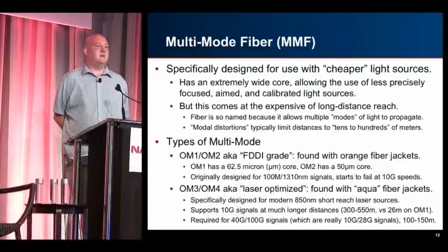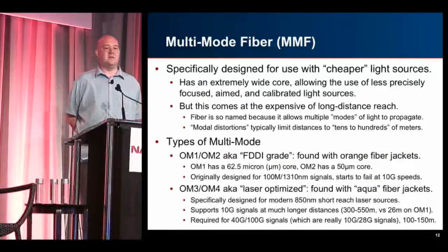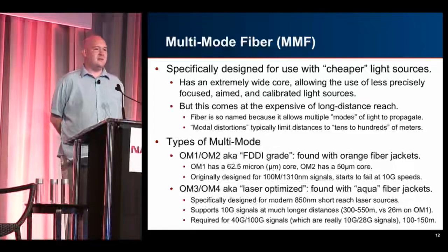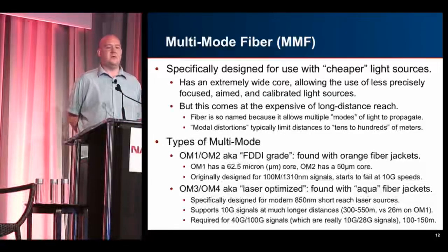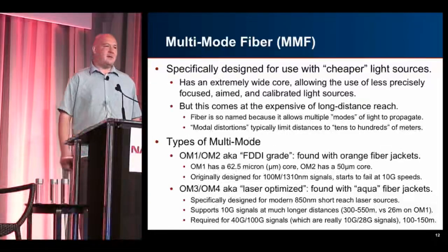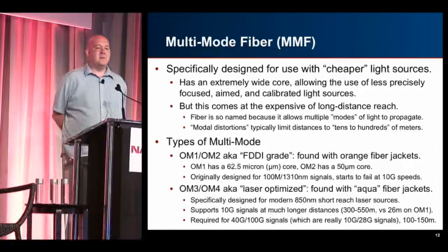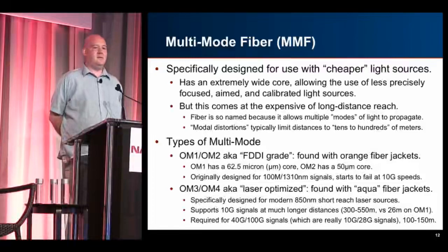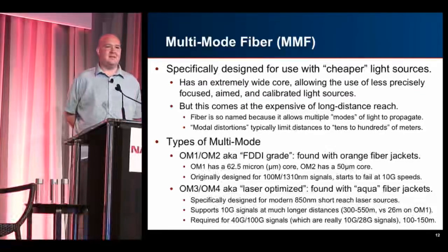Multi-mode is specifically designed to work with cheap light sources. The fiber itself isn't cheaper — actually multi-mode is more expensive than single-mode — but it lets you work with cheaper optics. If you've only got a short distance to go you can work with something less precise, less focused, less calibrated, with more variance with temperature. But it does this at the expense of reach. Multi-mode is named because it allows multiple modes of light to propagate, which causes modal distortions — you're never going to get more than tens to hundreds of meters.